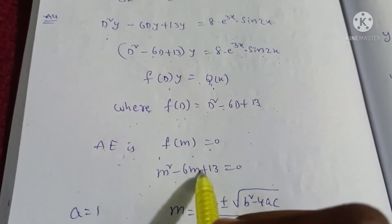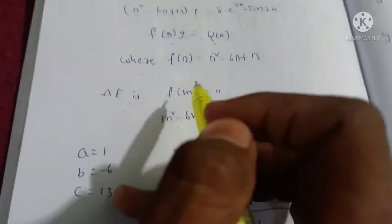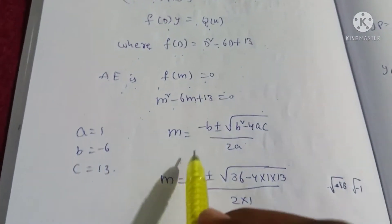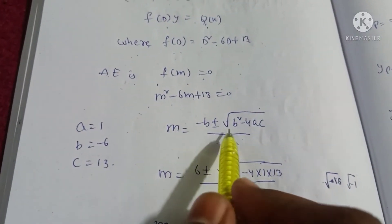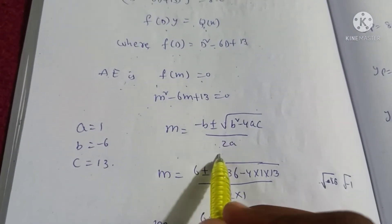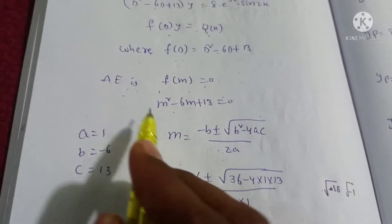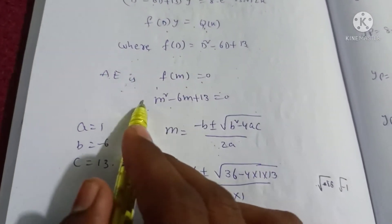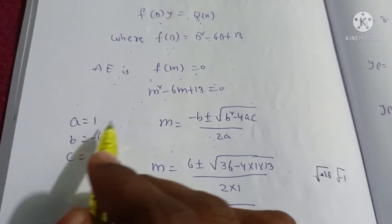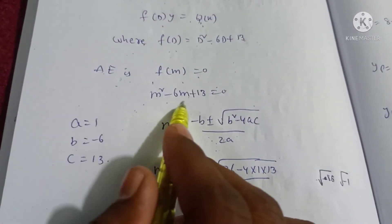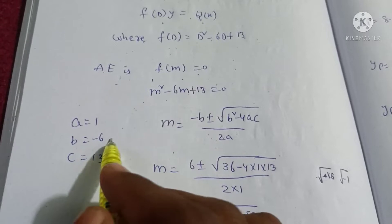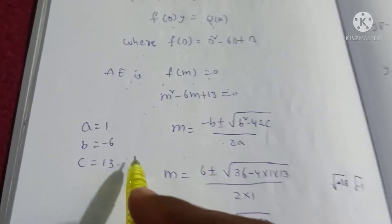So m² minus 6m plus 13 equals 0. Using the quadratic formula, m equals minus b plus or minus root of b² minus 4ac, all divided by 2a. Here a is the coefficient of m², b is the coefficient of m which is minus 6, and c is the constant 13.